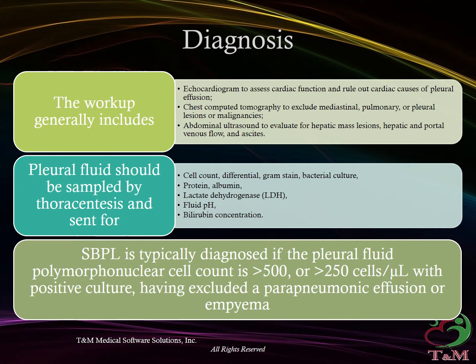Pleural fluid should be sampled by thoracentesis and sent for cell count, differential, gram stain, bacterial culture, protein, albumin, lactate dehydrogenase (LDH), fluid pH, and bilirubin concentration.